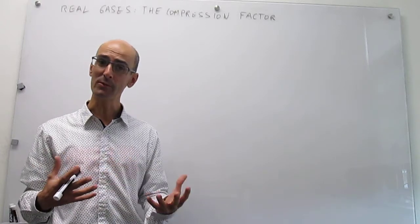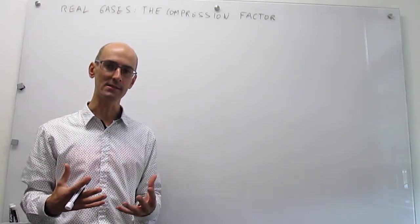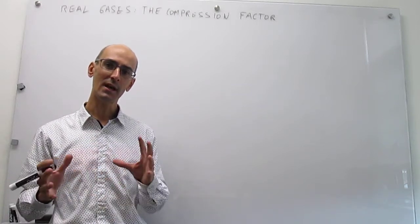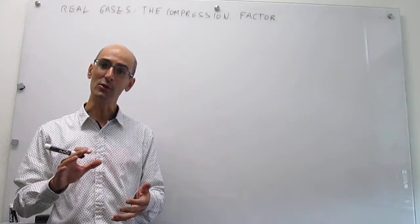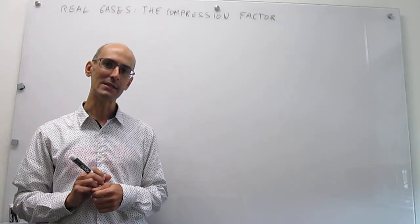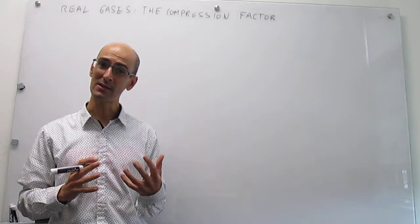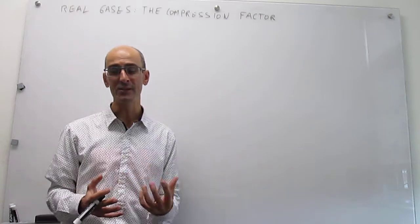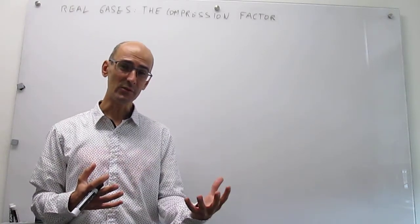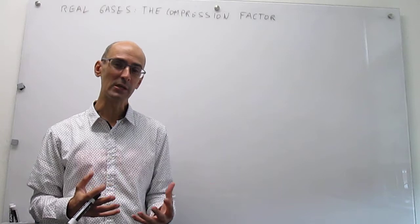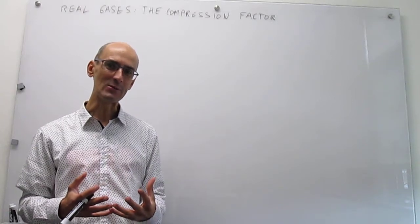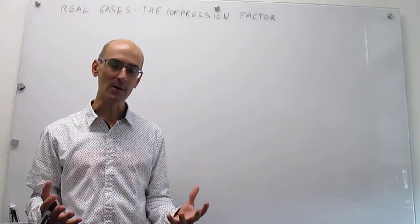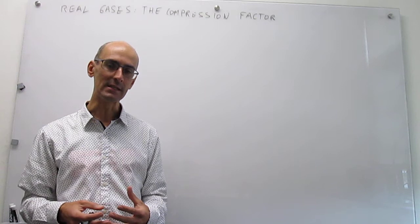It turns out that you don't always have ideal behavior in gases, especially when you start to increase the pressure. Those gas particles on average are going to be closer to each other, and what that means is that they will start to interact with each other, either attractively or repulsively. When those interactions turn on, the ideal gas equation of state breaks down and is no longer able to capture reality.